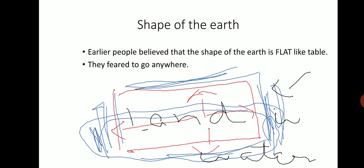Shape of the Earth. There is a lot of controversy about the shape of Earth. Earlier, people believed that the shape of Earth is flat like a table. They feared to go anywhere. They thought that if they go in any direction, they will fall down.